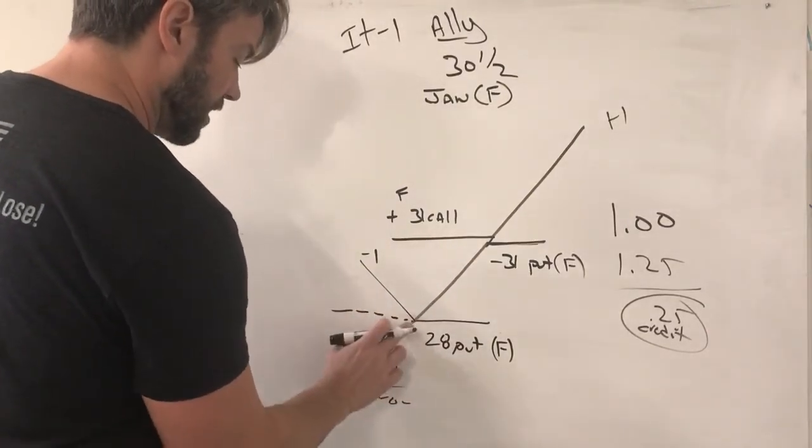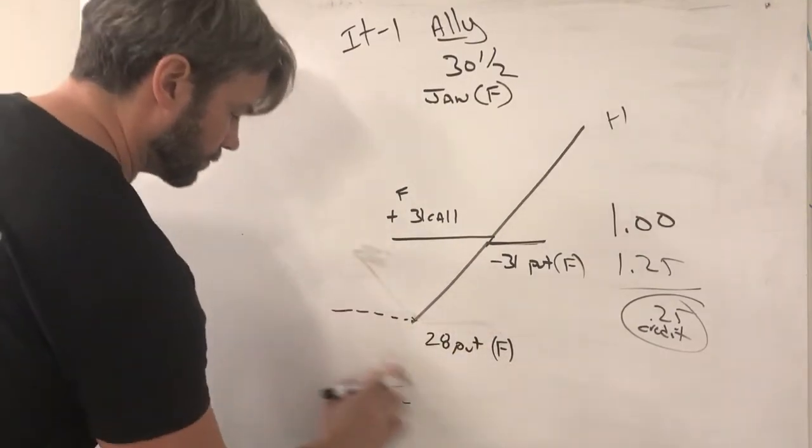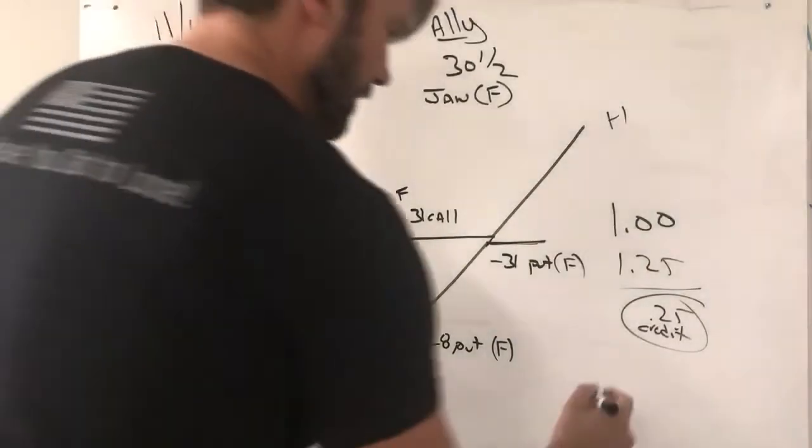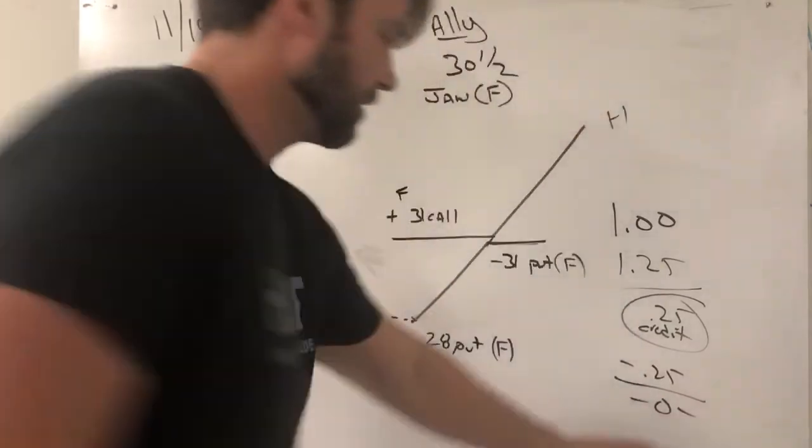Zero slopes have flat lines. So I'm left with a graph like this. And that put cost me twenty-five cents. So I'm into the trade for zero.